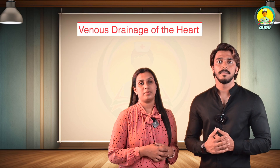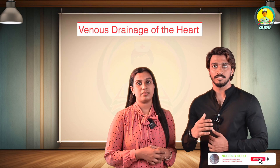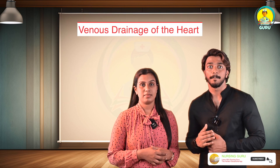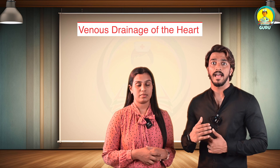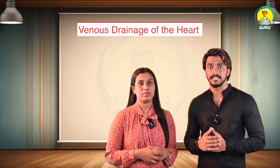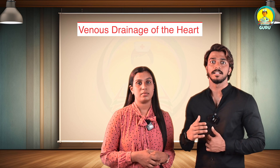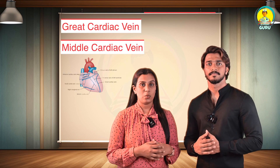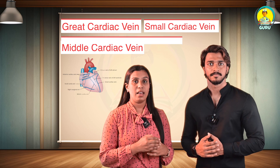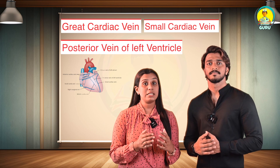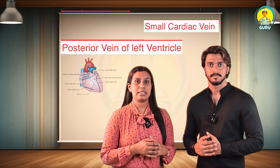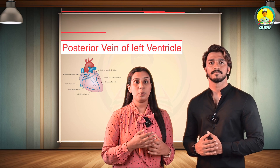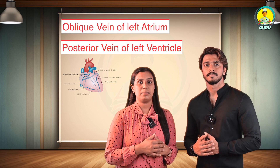Regarding the venous drainage of the heart, blood is returned to the right atrium by the anterior cardiac vein and by small veins that open directly into the heart chambers. These veins include the great cardiac vein, middle cardiac vein, small cardiac vein, posterior vein of the left ventricle, and the oblique vein of the left atrium.